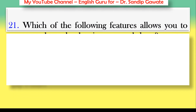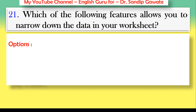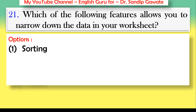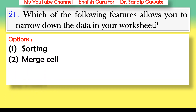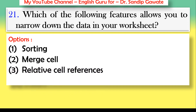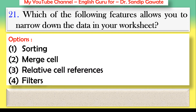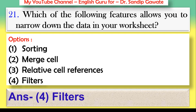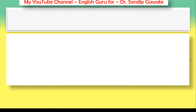Question 21: Which of the following features allows you to narrow down the data in your worksheet? Options: sorting, merge cell, relative cell references, or filters. The correct answer is option number four — filters.